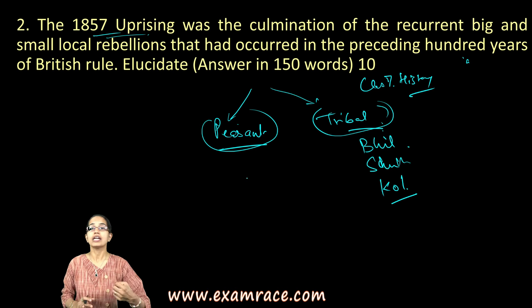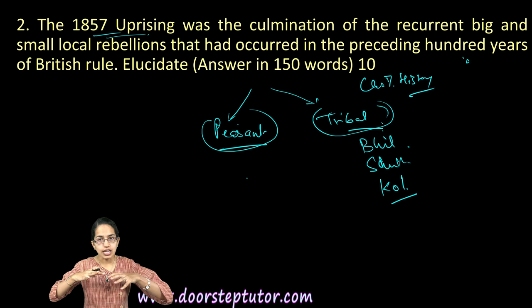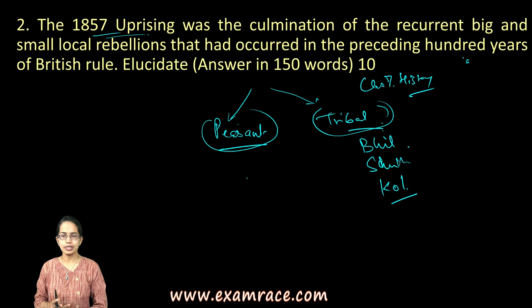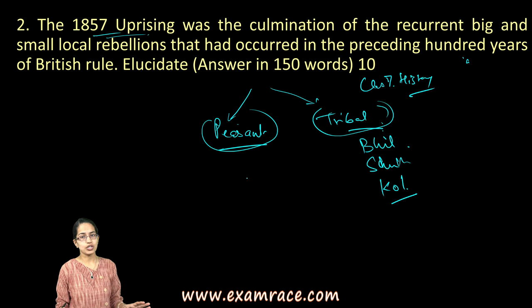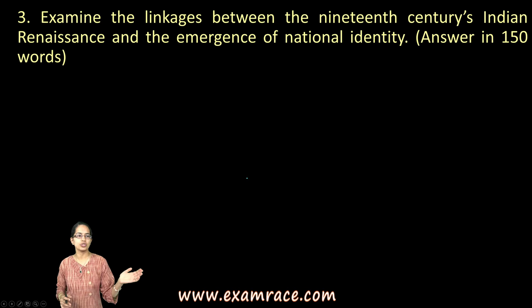There were also revolts from agricultural laborers — the Indigo revolution was one of the major ones. All these smaller revolutions formed the combined force behind the 1857 revolution, which was the founding stone for India's independence movement. You need to classify and categorize your answer well to bring out the best responses for the examiner.